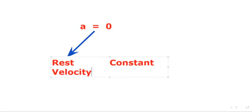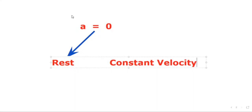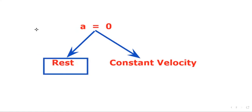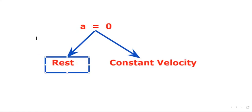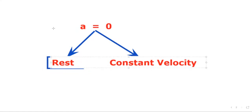Second possibility: the object is moving with constant velocity. When the velocity of the object is constant, the acceleration is 0. So when acceleration is 0, either the velocity of the object is constant or the object is in a state of rest — either velocity is 0 or velocity is constant.